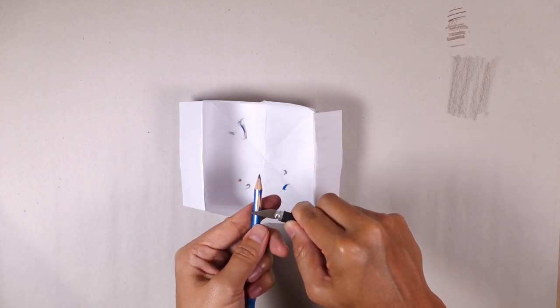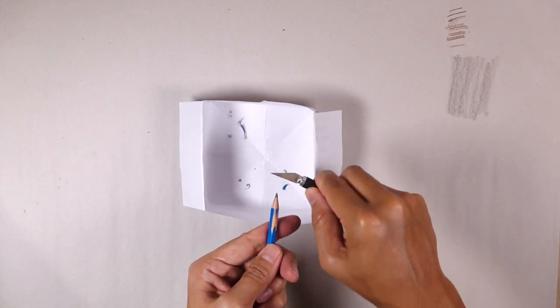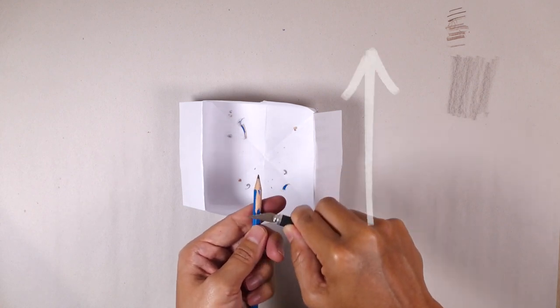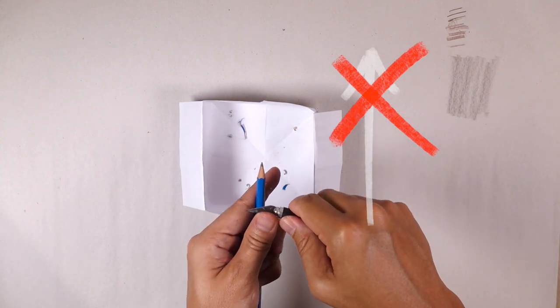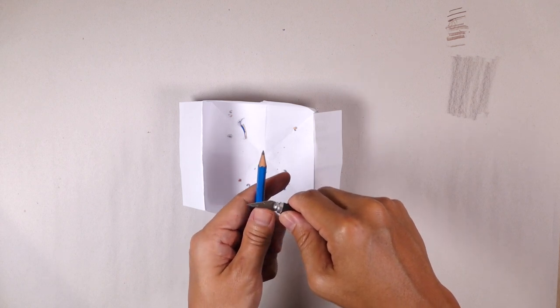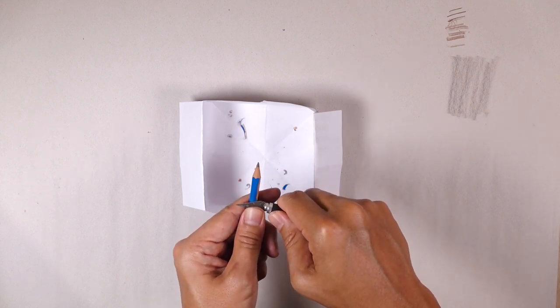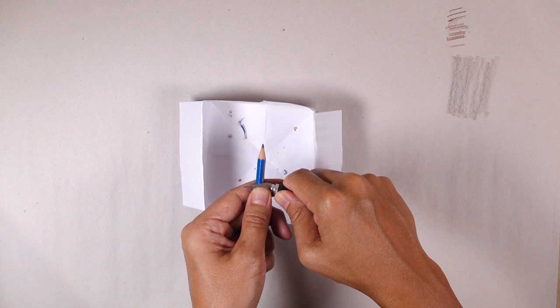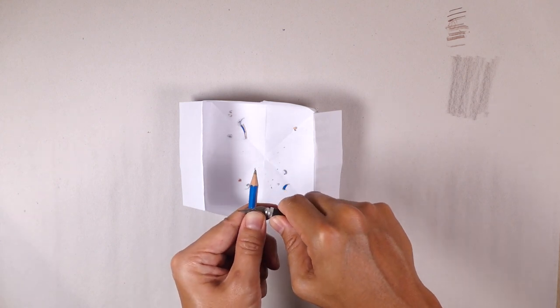I'm not doing this because it can get dangerous and you're not in control. What I do is I hold or balance the knife, the blade with my thumb on my left hand. I'm a right-hander so you can figure that out.